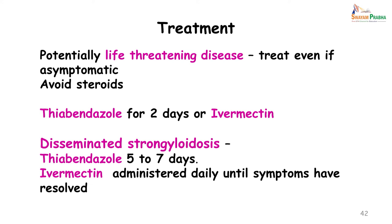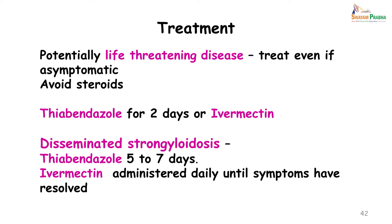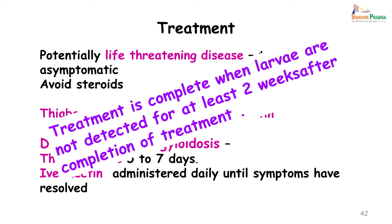Even in asymptomatic patients, strongyloids infections must be treated because they can prove fatal. Avoid giving steroids in such patients. Treatment used to consist of thiabendazole for 2 days; this was replaced by ivermectin. For disseminated strongyloidosis, thiabendazole is given for 5 to 7 days, whereas ivermectin is given daily until symptoms have resolved, confirmed by repeated stool examinations. Larvae should not be detectable at least 2 weeks after completion of treatment.